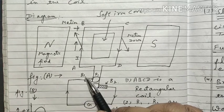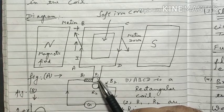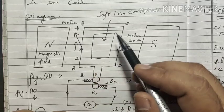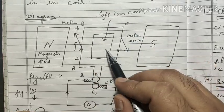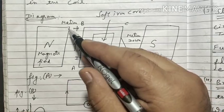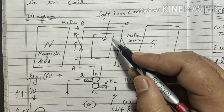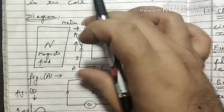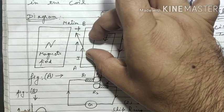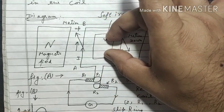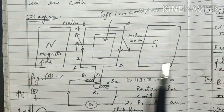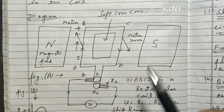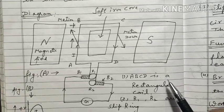We have brushes B1, B2, slip rings R1, R2, and rectangular coil ABCD. Inside the coil ABCD we place a soft iron core, so that all the magnetic field passes through the soft iron first, then continues toward the North and South poles. This way, all the magnetic field crosses through the center of the soft iron piece — that is why we use a soft iron core.